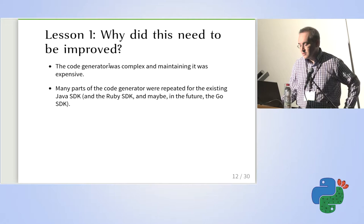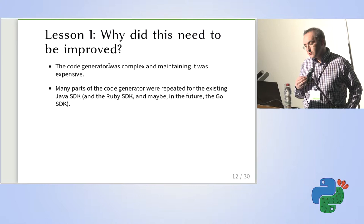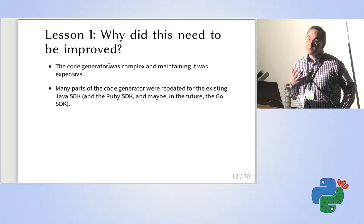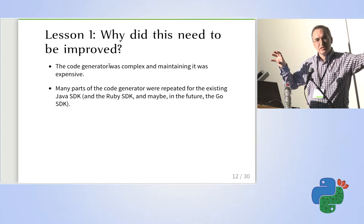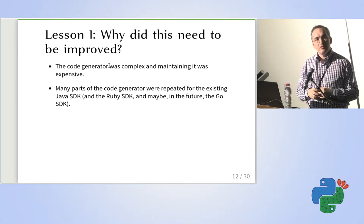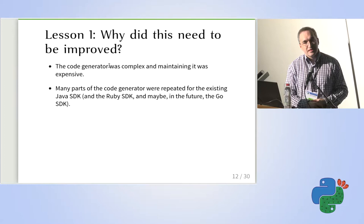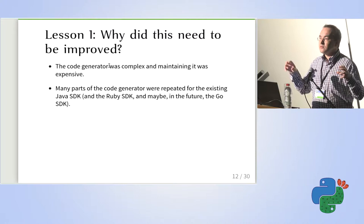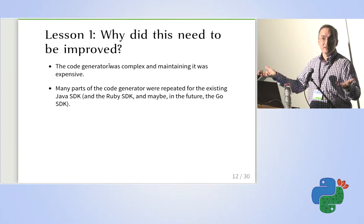Why did we need to improve that? Basically because the code generator was very complex and very hard to maintain — very expensive to maintain. The reason is that we had to take two completely different sources, the XML schema and the RSDL, and from that infer what we had to generate in the SDK. Another reason was that we also had other SDKs like the Java SDK, meaning part of that code generator was duplicated in several places.